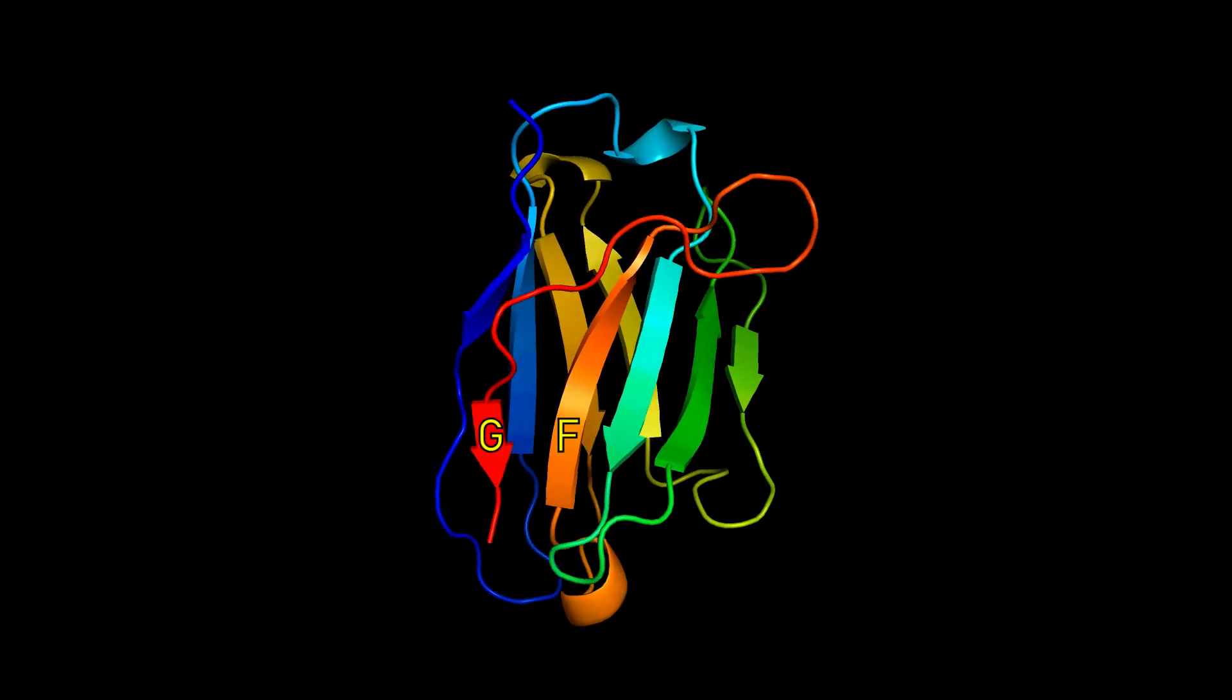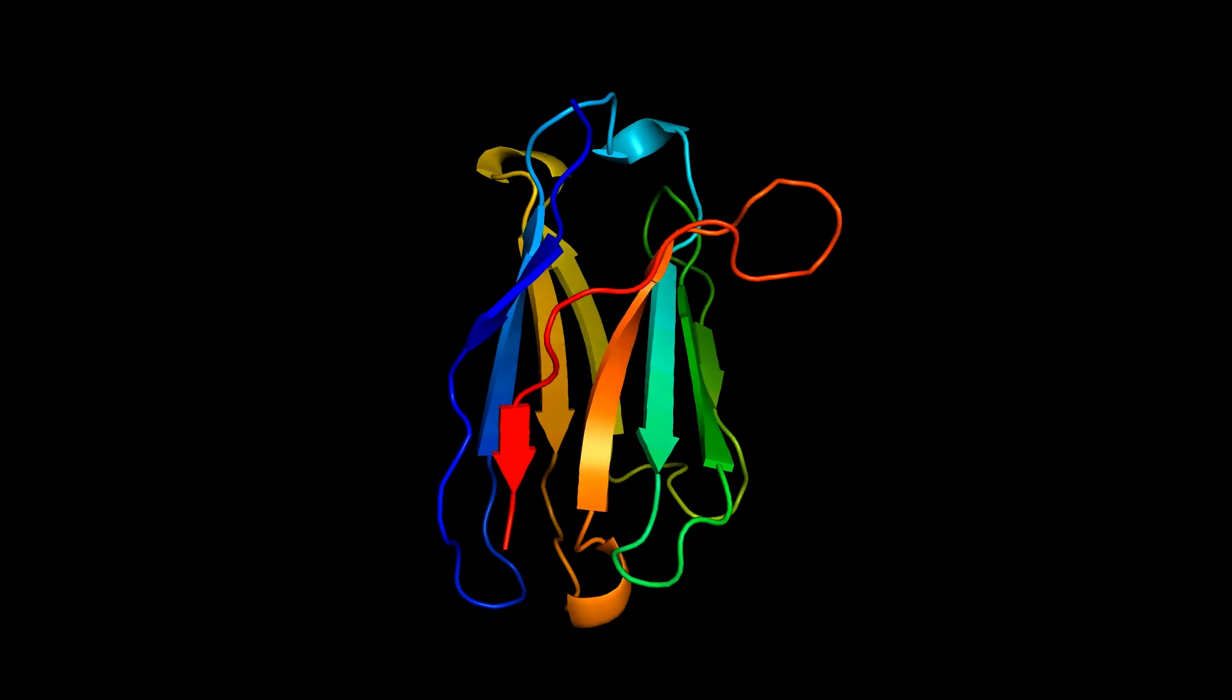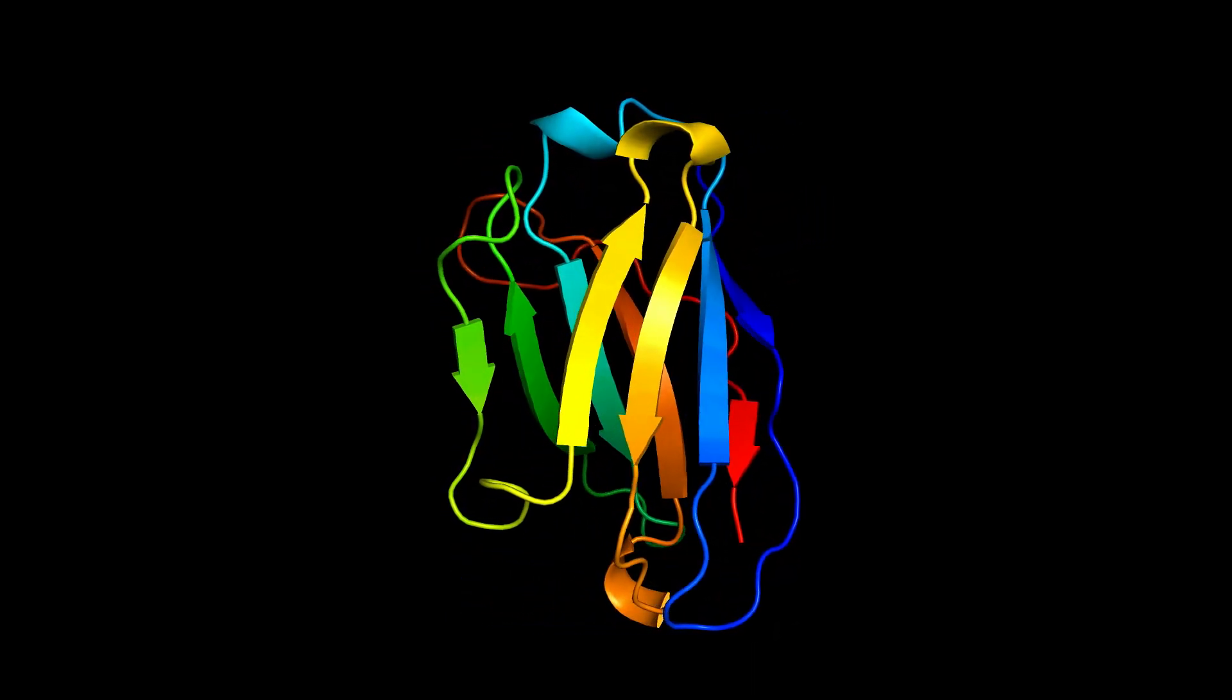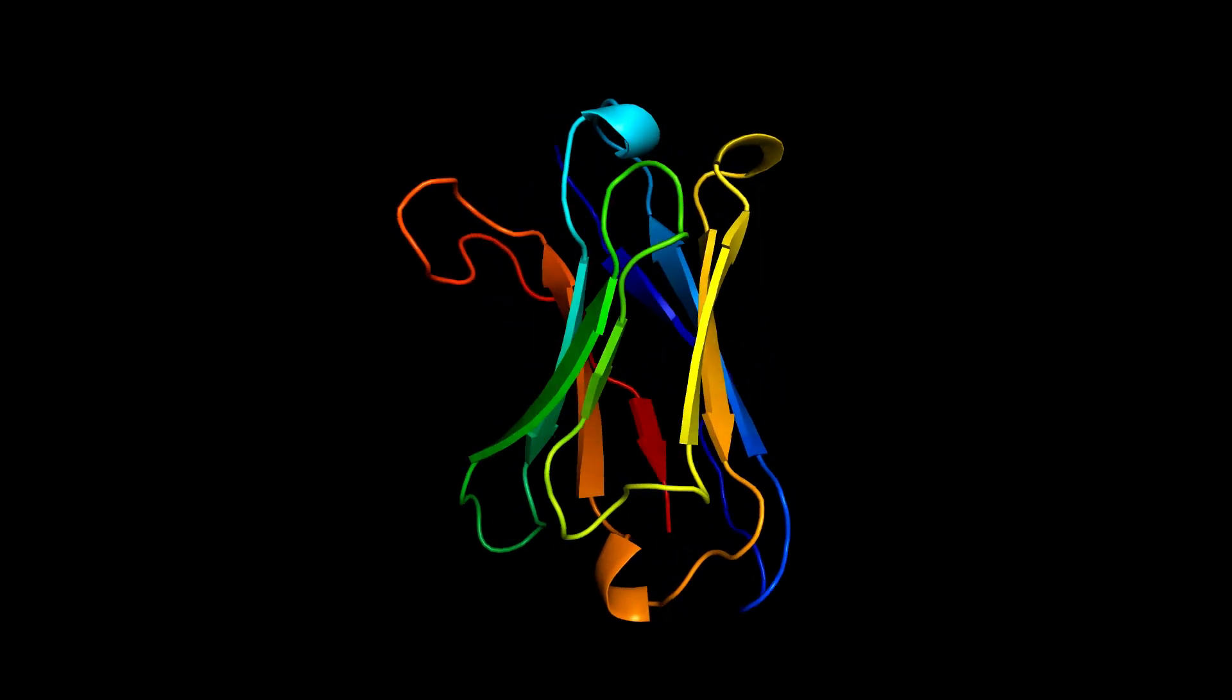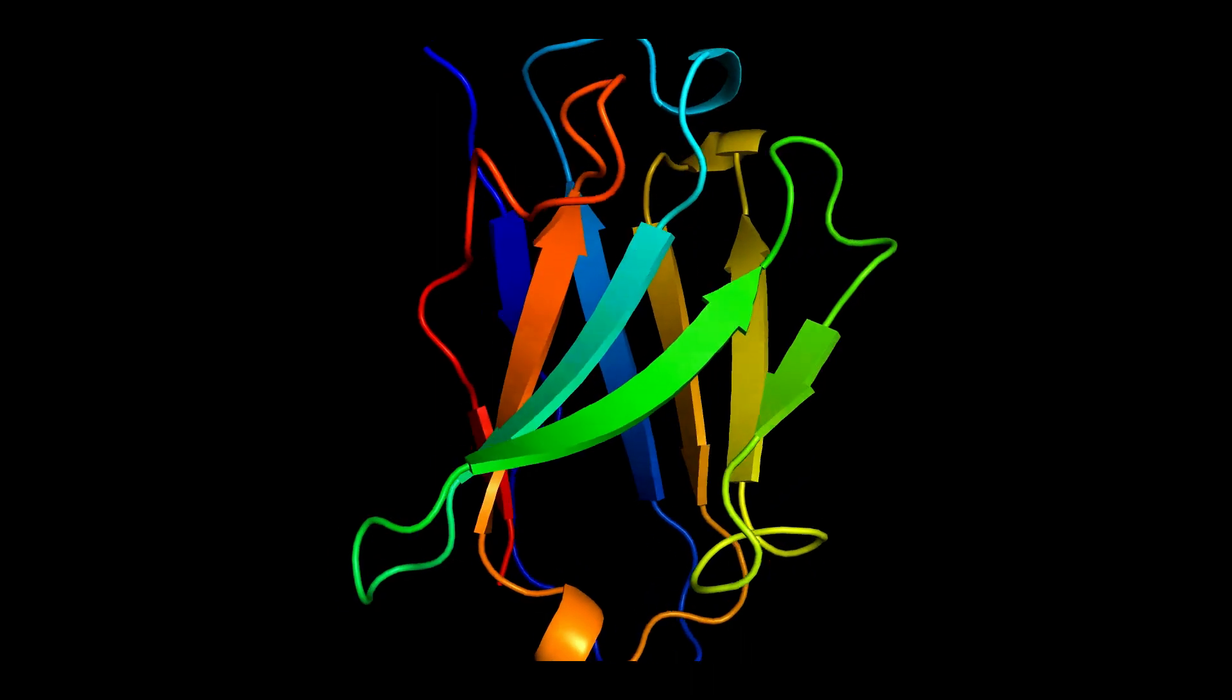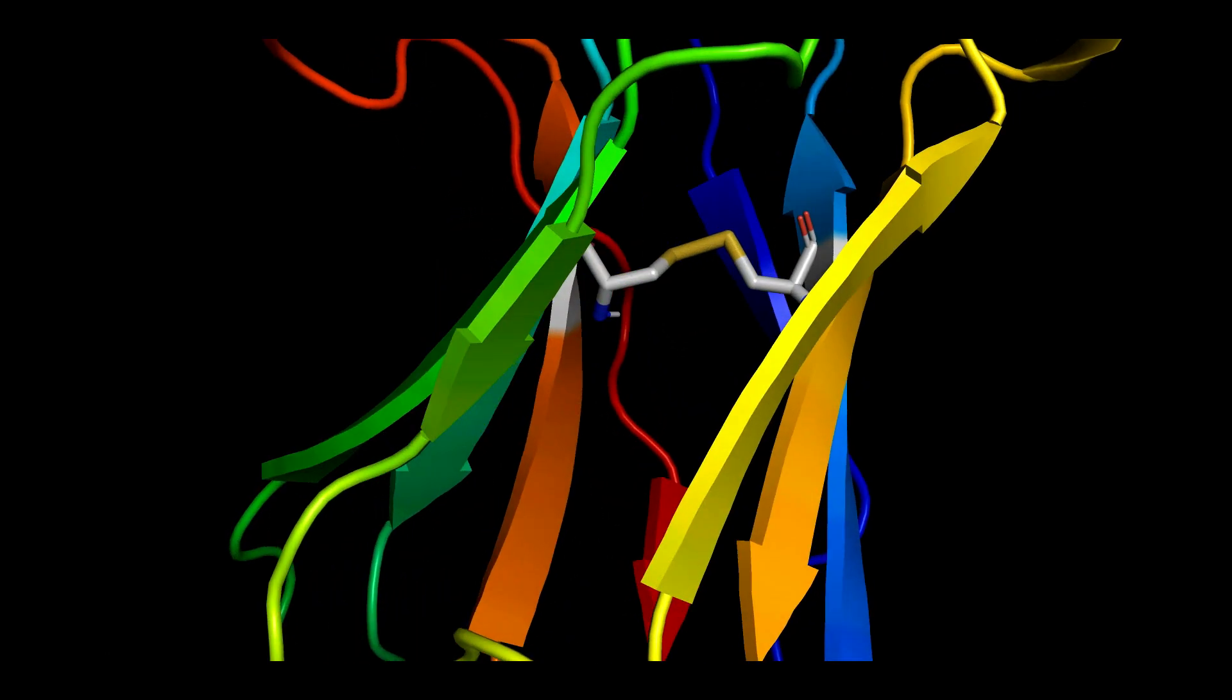There are nine strands in the variable domain immunoglobulin fold, compared to seven in the constant domains. And here's the disulfide bond linking the B and F strands.